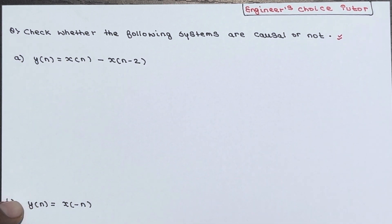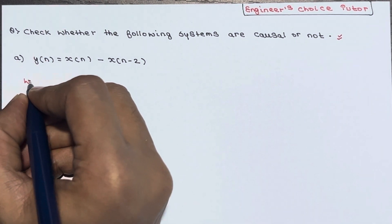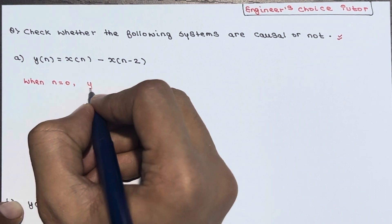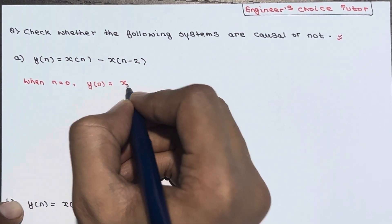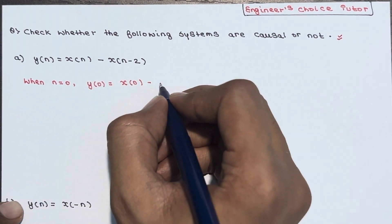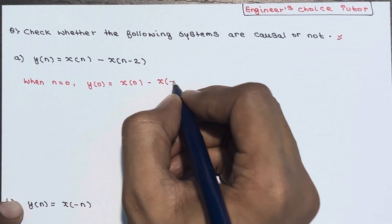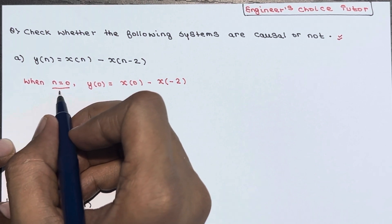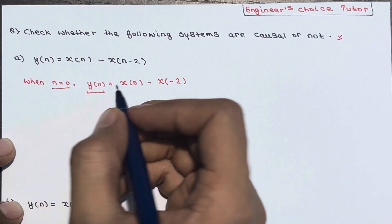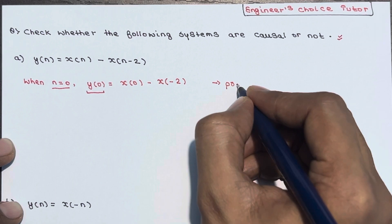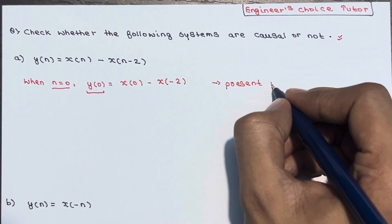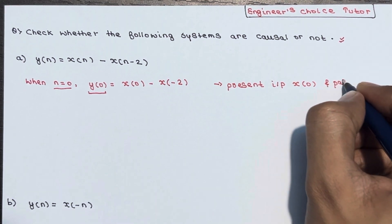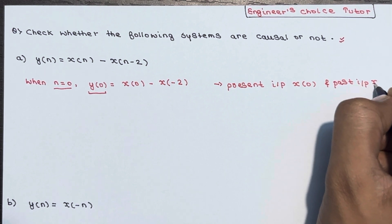But it is better to follow a different approach in an exam. Suppose when n = 0: y(0) = x(0) - x(0-2) = x(0) - x(-2). So the response at n = 0, that is y(0), depends on the present input x(0) and the past input x(-2).